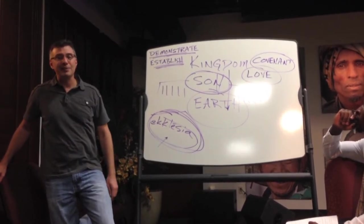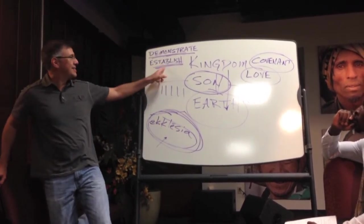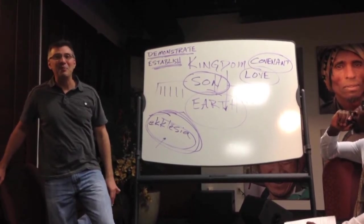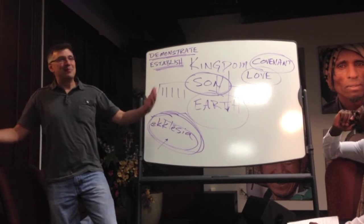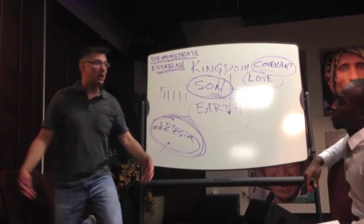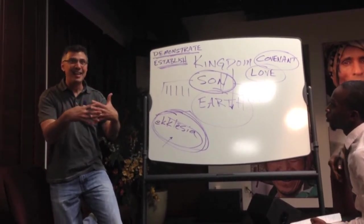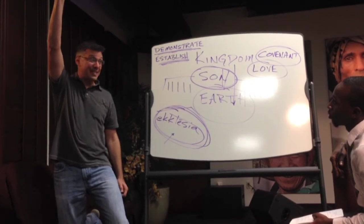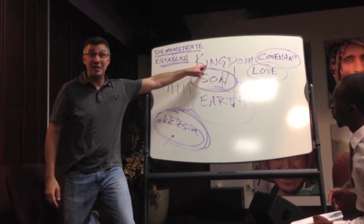You don't have the kingdom established in the city until you have covenant relationships among the people. So if they're divided over all these Jew-Gentile things, what do they have to be? Established. So what does Paul do? Preach the gospel of the kingdom.